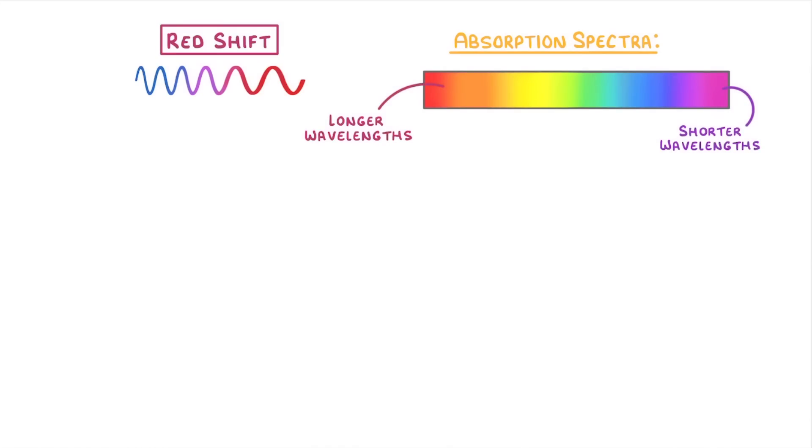To understand Redshift, we first need to understand absorption spectra. This box here shows the absorption spectra for visible light that's emitted from the sun and observed here on Earth. On the left, we have the longer red wavelengths of light, and on the right, we have the shorter purple wavelengths.